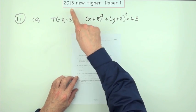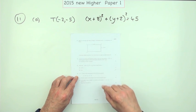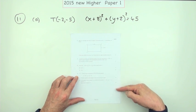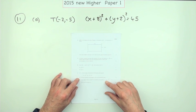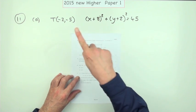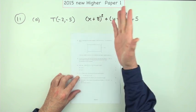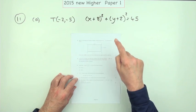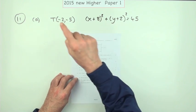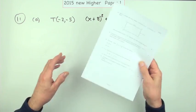Number 11 from the 2015 New Higher Paper 1, a 10-mark question with two parts. Part A: T, negative 2, negative 5, lies on the circumference of the circle. What's the equation of the tangent to the circle passing through T? Four marks.